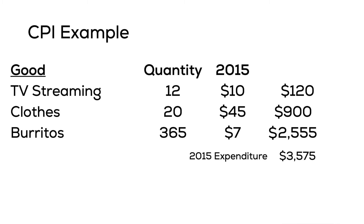The total expenditure on TV streaming is $120. For clothing, that will be 20 times $45. The total expenditure on clothing in 2015 is $900. Burritos cost $7 each and the basket includes 365 units, so the total expenditure on burritos is $2,555.